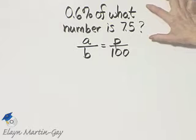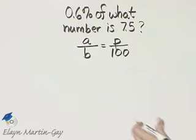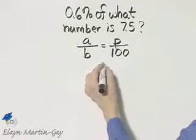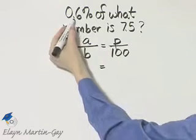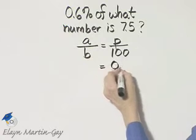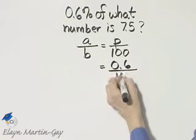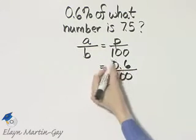Let's now solve this problem using a proportion. Amount over base equals percent over 100, and we'll fill in the values. The percent is easily identifiable. There's my percent over 100.